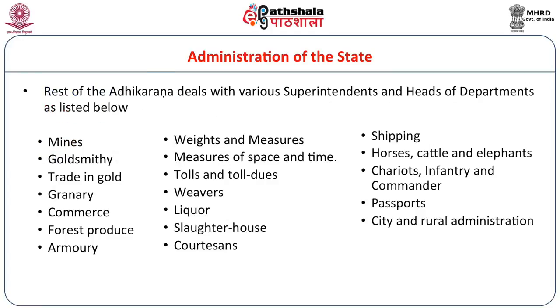Within the administration of the state, if you just look at the list of departments, you understand that not much has changed. The departments dealt with are: mines, goldsmithing, trade in gold, granary, commerce, forest produce, armory, weights and measures, measures of space and time, tolls and toll dues, weavers, liquor, slaughterhouse, courtesans, shipping, horses, cattle and elephants, chariots, infantry and commander, passports, and city and rural administration. It is amazing that after two millennia, these remain more or less the main aspects of administration.